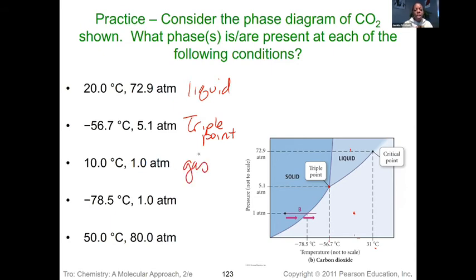At negative 78.5 and one atmosphere, we're landing right on that line, and so that would be our sublimation point or our deposition point. That transition, and so either phase could be there.